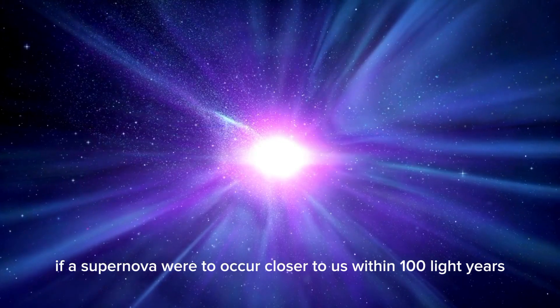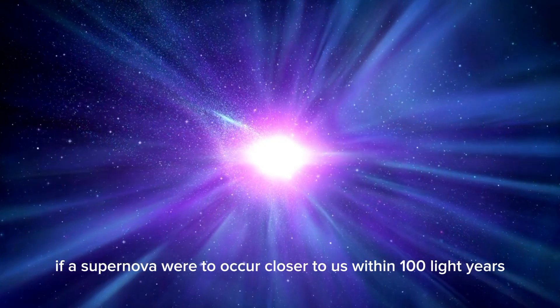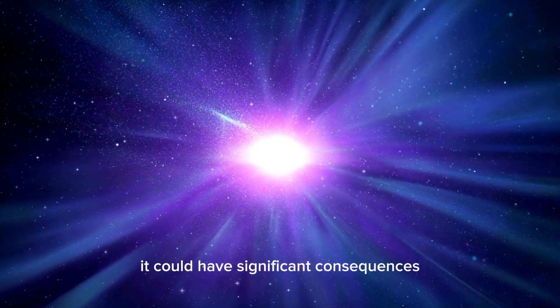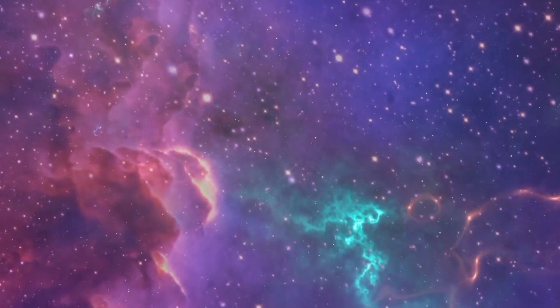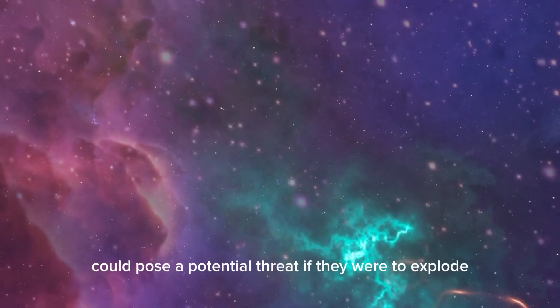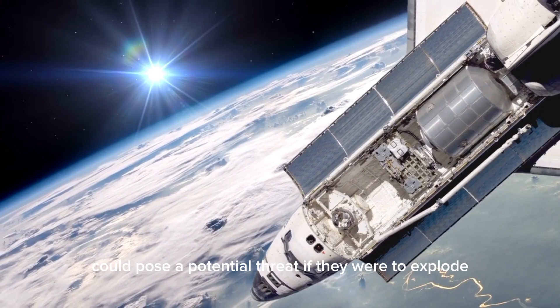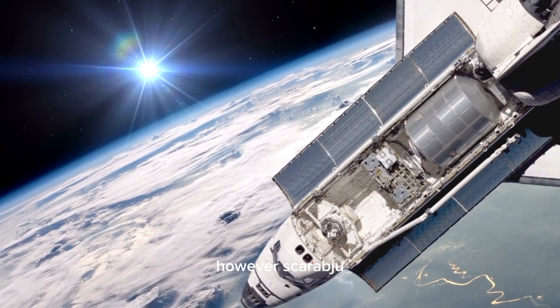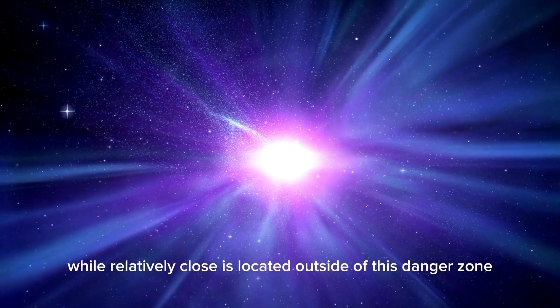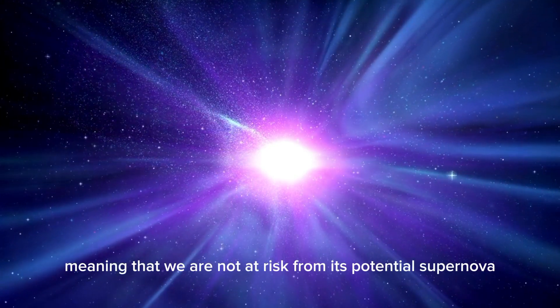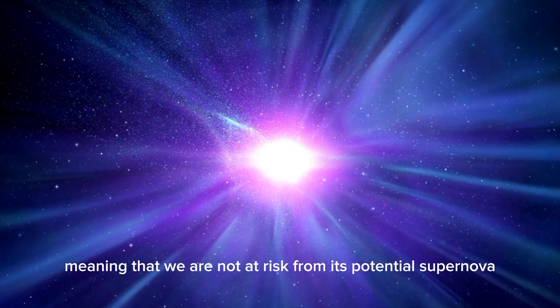If a supernova were to occur closer to us, within 100 light-years, it could have significant consequences. Stars like Alpha Centauri, which are within this range, could pose a potential threat if they were to explode. However, Betelgeuse, while relatively close, is located outside of this danger zone, meaning that we are not at risk from its potential supernova.